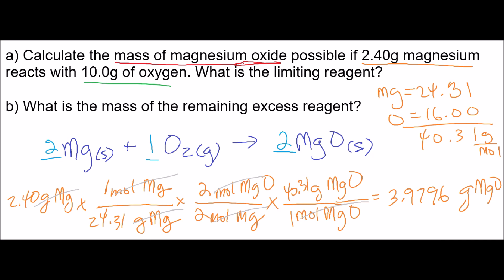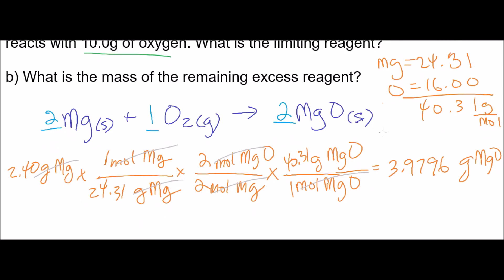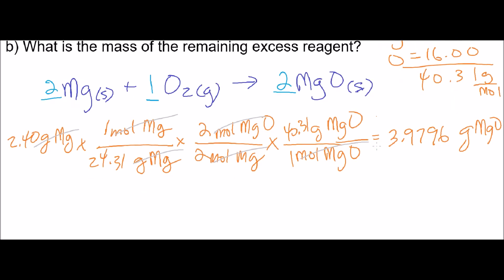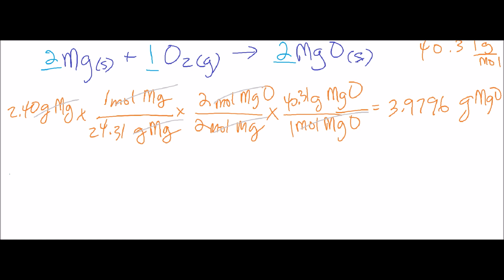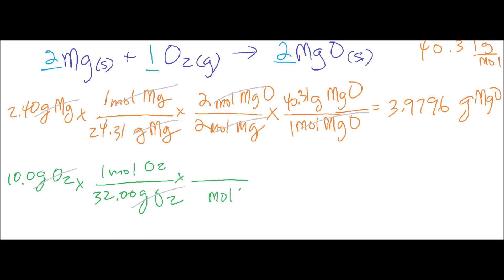That's how much magnesium oxide we can make with the given amount of magnesium. Now we need to do the same calculation with the 10 grams of oxygen. Starting with 10 grams of O₂, convert that to moles — the molar mass of O₂ is 32.00 grams. Cancel that out. Now we need the mole ratio between moles of O₂ and moles of magnesium oxide. Looking at our balanced equation, that's a one-to-two ratio.